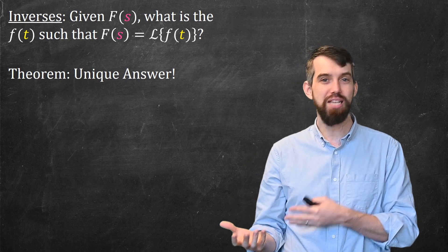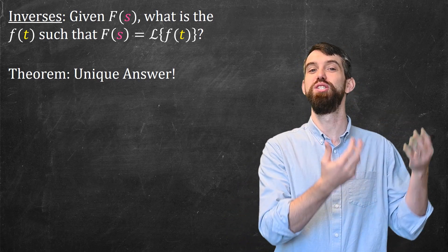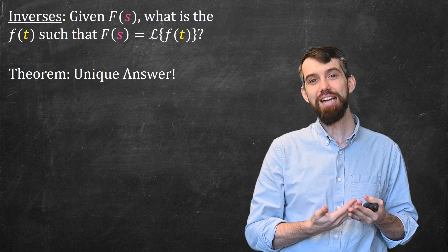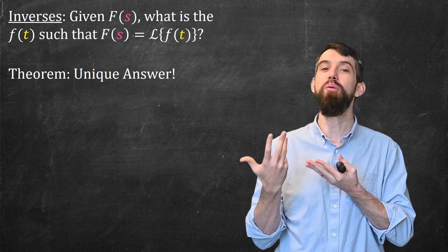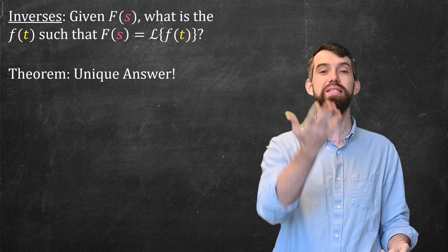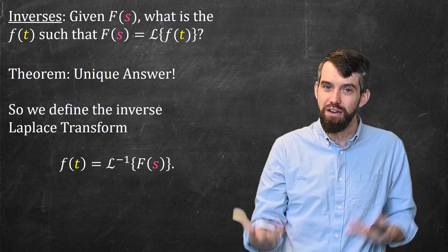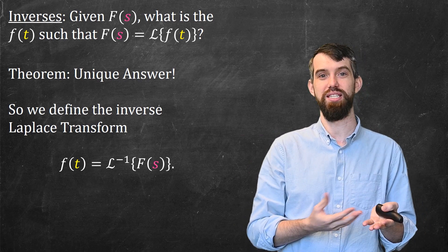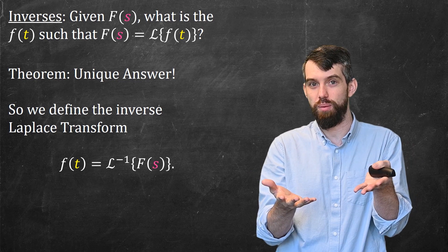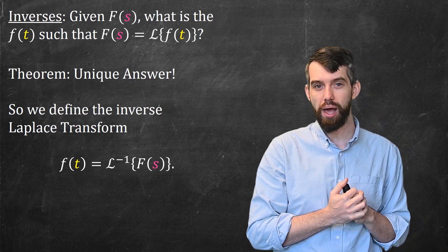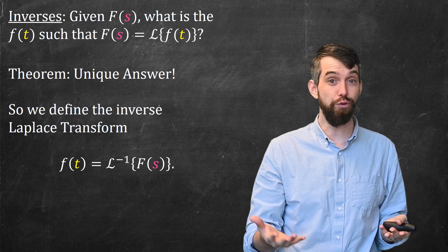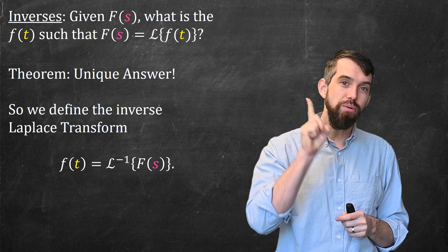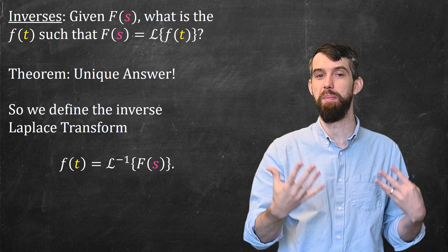Indeed, we have seen in the past, in our study of differential equations, that questions about existence and questions about uniqueness go hand in hand. And here, the fact that there is this unique ability to undo this means that I can actually define an inverse Laplace transform. That is, I will define a new symbol, which is the squiggly L of the Laplace transform, but to the power of minus one. And then the inverse Laplace transform of some function big F(s) is just that unique answer, that unique little f(t) that this theorem guarantees.